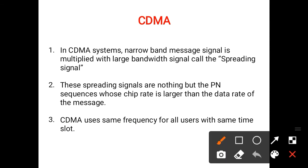In a CDMA system, a narrowband message signal is multiplied with a large band signal called the spread signal. One signal is the message signal and the other is a pseudo-random signal, that is the spread signal. This spreading signal is also called the PN sequence — a pseudo-random code sequence whose chip rate is larger than the data rate of the message. CDMA users use the same frequency for all users at the same time.